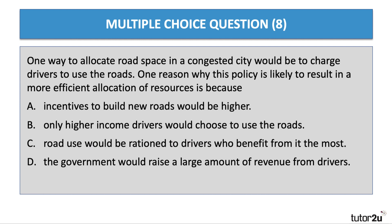We have one final question — Question 8. One way to allocate road space in a congested city would be to charge drivers to use the roads. One reason why this policy is likely to result in a more efficient allocation of resources is — which one is it? Is it A, B, C, or D? Have a go at question 8.